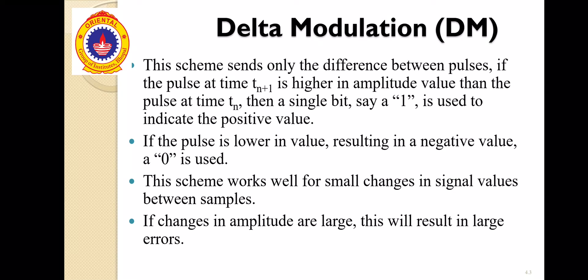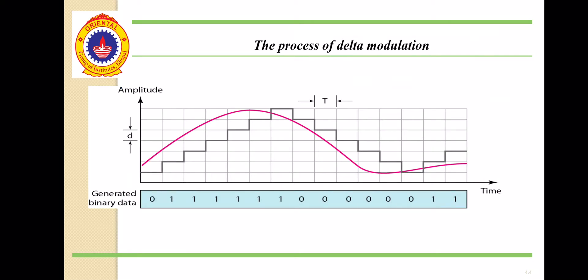In Delta Modulation, we are using 1 bit per sample instead of n bits per sample. In PCM, we use n bits per sample. But in Delta Modulation, we use only 1 bit per sample, that is 0 or 1. If the pulse is lower in value resulting in a negative value, that means 0 is used. But if a single bit of 1 is used to indicate the positive value, the pulse is higher in value. This scheme works well for small changes in signal values between samples. If changes in amplitude are large, this will result in large errors.